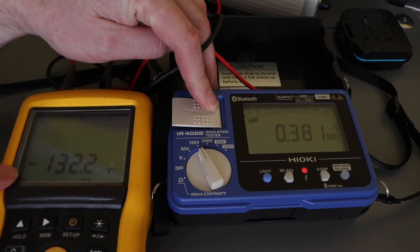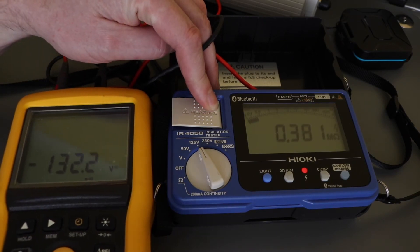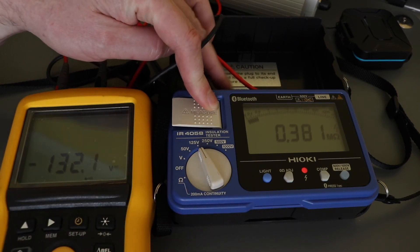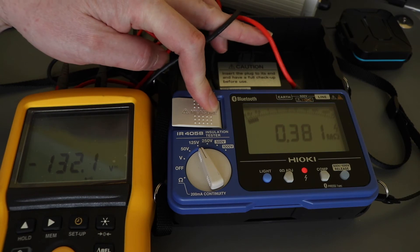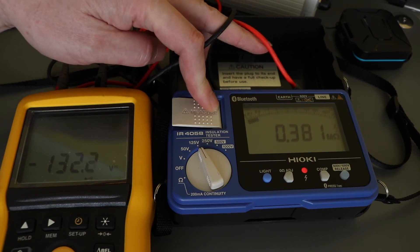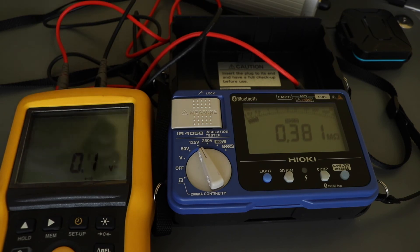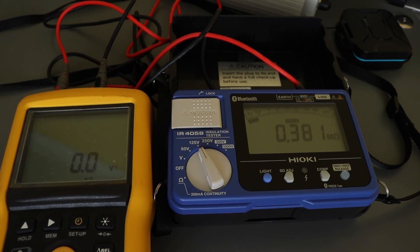You can see I have a negative reading here. This is actually putting out positive volts on the earth and zero volts is on the line connection, which doesn't follow normal convention for an insulation tester.